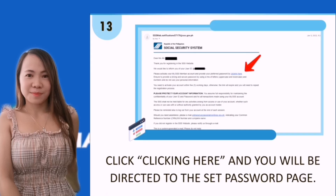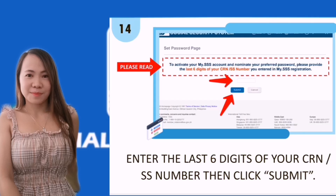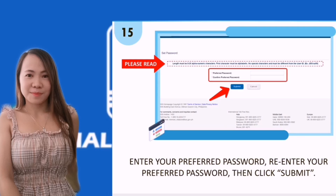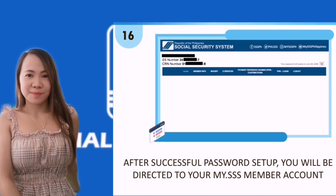You will receive an email — just click 'Click Here' and you'll be directed to the Set Password page. Enter the last six digits of your CRN and submit. Enter your preferred password, re-enter your preferred password, then click Submit.